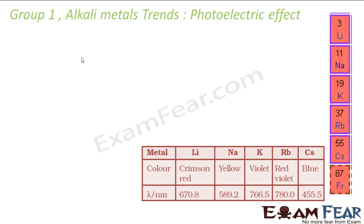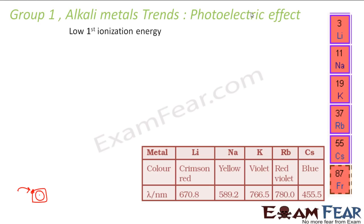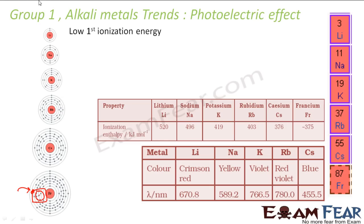Let us talk about the photoelectric effect for alkali metals. What is photoelectric effect? You have a metal, you put some sun rays or any photon ray here. The photons have energy. If that energy is sufficient to pull out electrons from the atom, then you see a photoelectric effect. Alkali metals have very low first ionization energy because they have one extra electron in the outermost shell and they easily want to lose that electron to become stable. Since it has low ionization energy, it can easily lose electrons on exposure to light. The energy of the photon is sufficient to eject the valence electron.